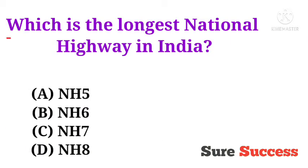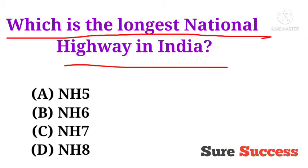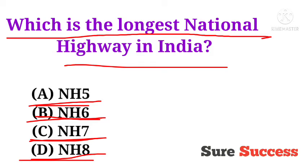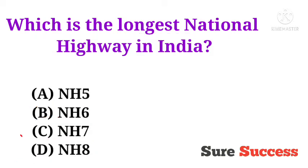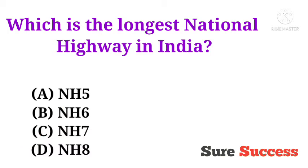Which is the longest national highway in India? Options are NH5, NH6, NH7, and NH8. The correct answer is NH7 — it is the longest national highway in India.